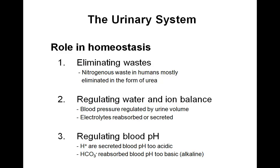Hydrogen ions are secreted if blood pH readings are too acidic. And bicarbonate ions are reabsorbed if blood pH readings are too basic or alkaline. Remember, blood pH has a narrow range between 7.35 and 7.45.